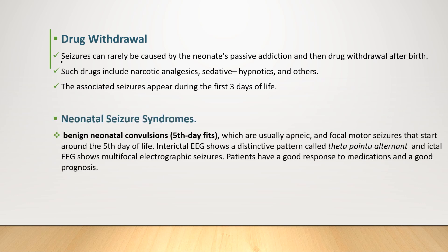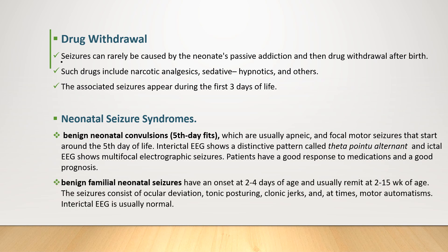Benign neonatal convulsions, or fifth-day fits, are usually apneic focal motor seizures starting around the 5th day of life. Interictal EEG shows a distinctive pattern called theta-point alternant, and ictal EEG shows multifocal electrographic seizures. Patients have a good response to medication and good prognosis. Benign familial neonatal seizures have an onset of 2-4 days of age and usually disappear around 2-15 weeks of age. The seizures consist of ocular deviation, tonic posturing, clonic jerks, and at times motor automatisms. In this case, interictal EEG is usually normal, unlike that of benign neonatal convulsions.